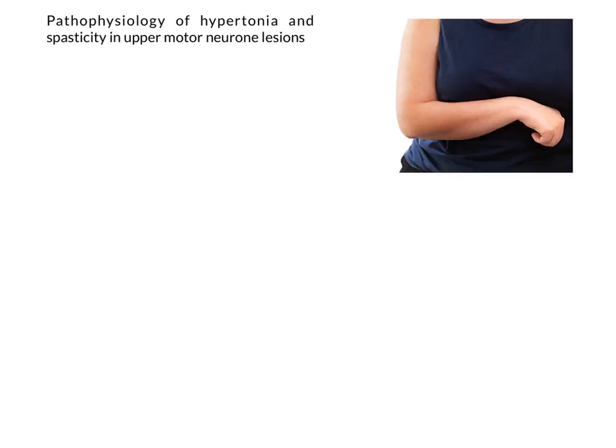In this mini-tutorial we're going to think about one of the most common effects of an upper motor neurone lesion, and this is increased tone within the affected limb, the condition known as hypertonia. One manifestation of hypertonia is something called spasticity, which we can see in the image here and which I'll talk about in more detail later on.